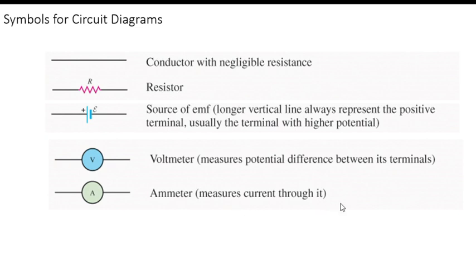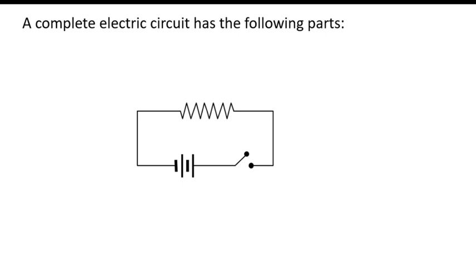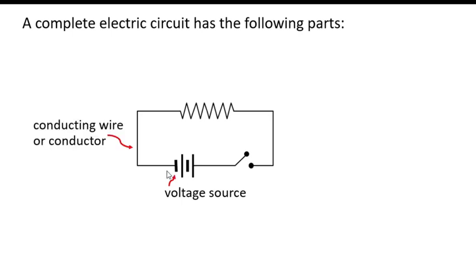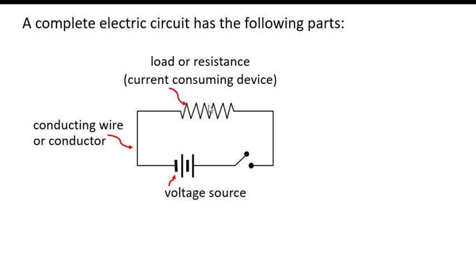Since this experiment is about circuits, it is important that you know the complete parts of an electric circuit. An electric circuit has the following parts: the source of EMF or the voltage source, the conducting wires, and the load or resistance or any device that is current consuming.